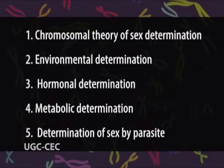Sex of an organism is determined by many factors: the morphological, cytological, genetical, physiological and environmental factors determine the sex. Based on this, sex determination is explained by several theories — for example, chromosomal theory of sex determination, environmental determination, hormonal determination, metabolic determination, and determination of sex by parasite.